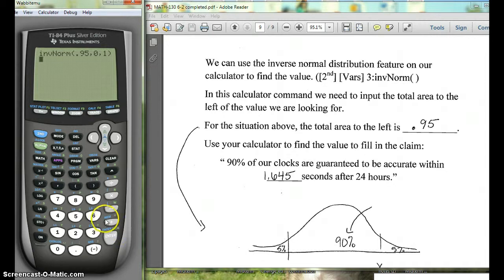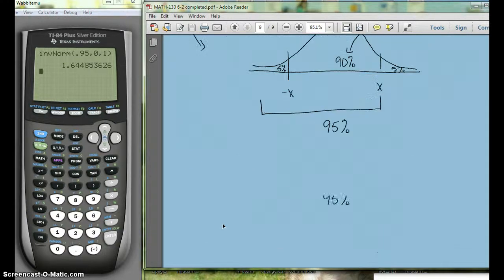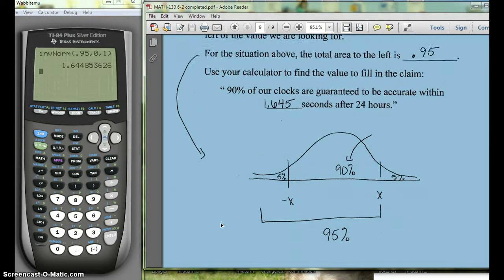Now if you have an 83, you'll hit inverse norm, it'll bring up parentheses, you can just put 0.95, and if it's the standard normal, you can just close the parentheses. We'll hit enter and we get 1.64 seconds, or 1.645 if we round to three decimal places.